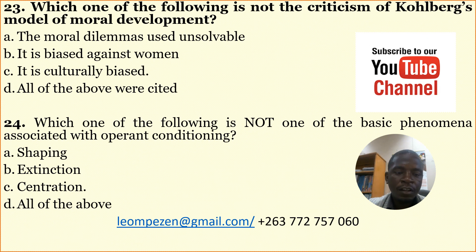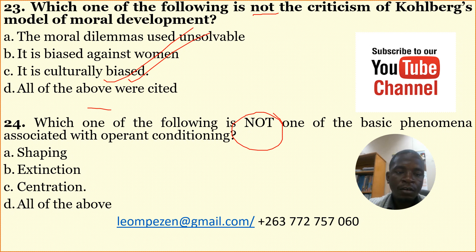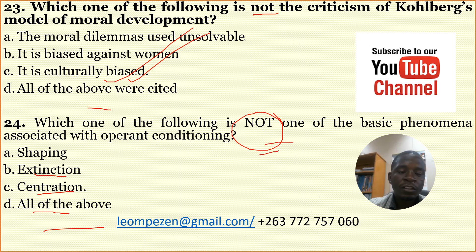Number twenty-three: Which of the following is NOT a criticism of Kohlberg's model of moral development? The correct answer is C: it is culturally biased. Number twenty-four: Which of the following is NOT one of the basic phenomena associated with operant conditioning? A: shaping, B: extinction, C: centration, D: all of the above. The correct answer is C: centration.